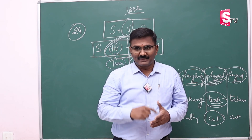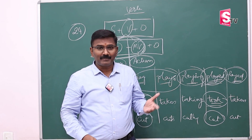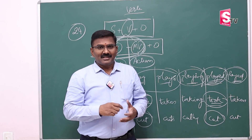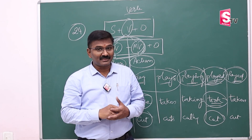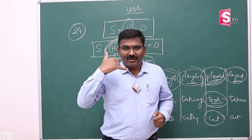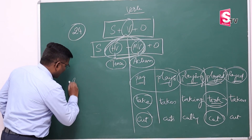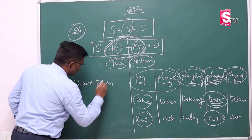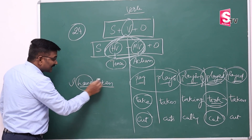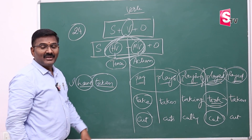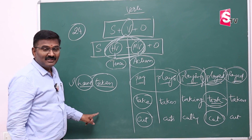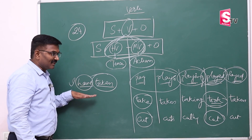Let me give you a practical example. It happened once — I visited an IT office. I was a fresher going for onboarding. The team lead called and said, 'Sir, I have taken my ID card.' Notice: 'taken' is the past participle form, used here with the helping verb 'have.' This is the correct sentence. So, 'I have taken my ID card, sir' — that is the right way to say it.